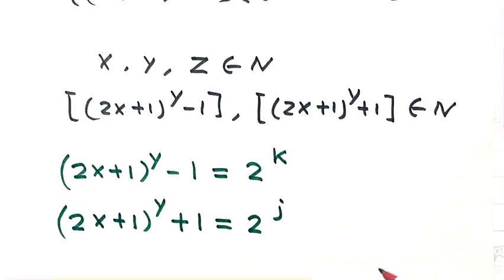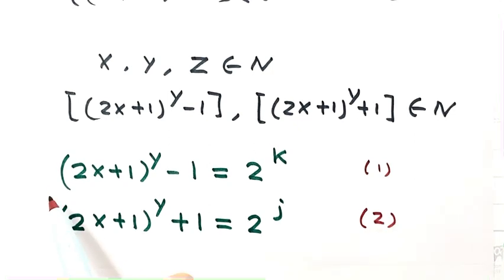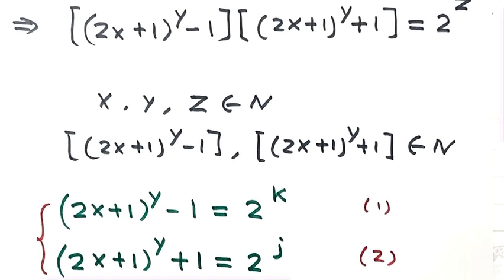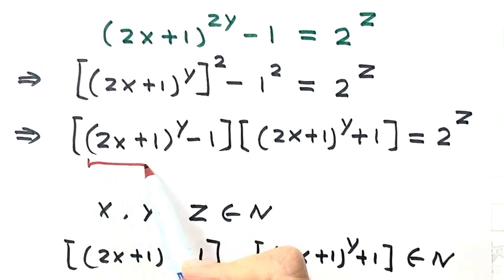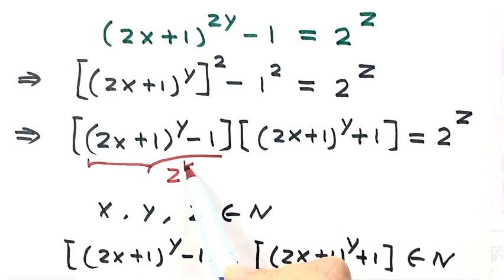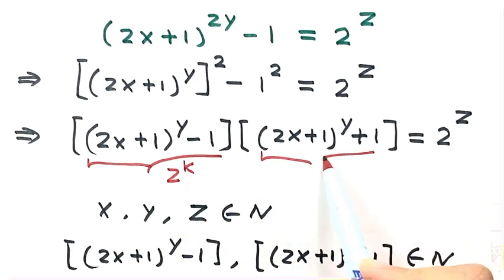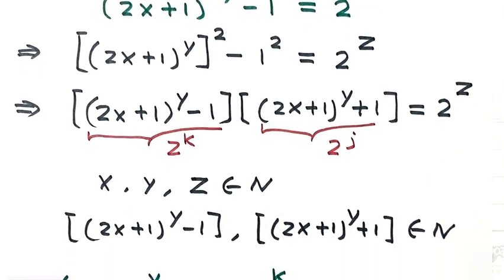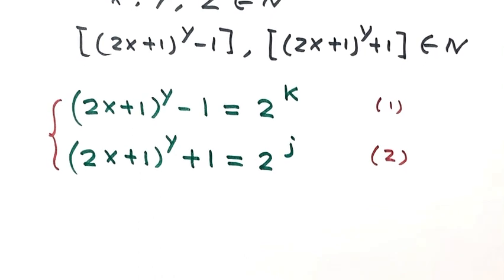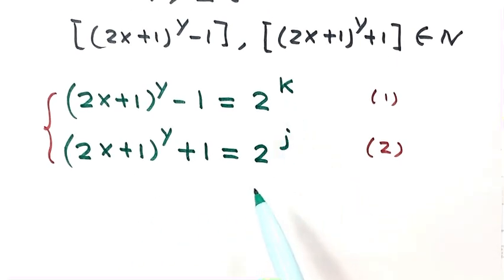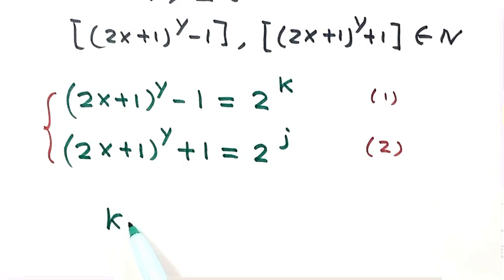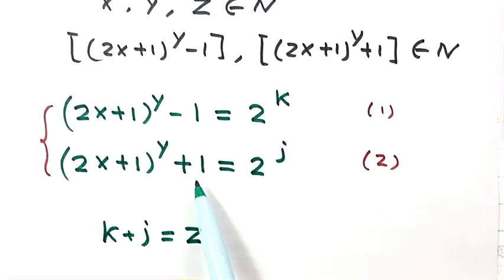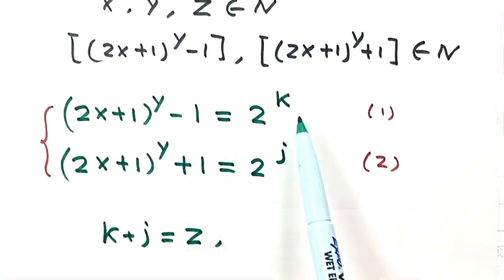We label these as equation 1 and equation 2. Since 2^k · 2^j = 2^z, we have k + j = z. And because equation 2 has a plus and equation 1 has a minus, j is greater than k.